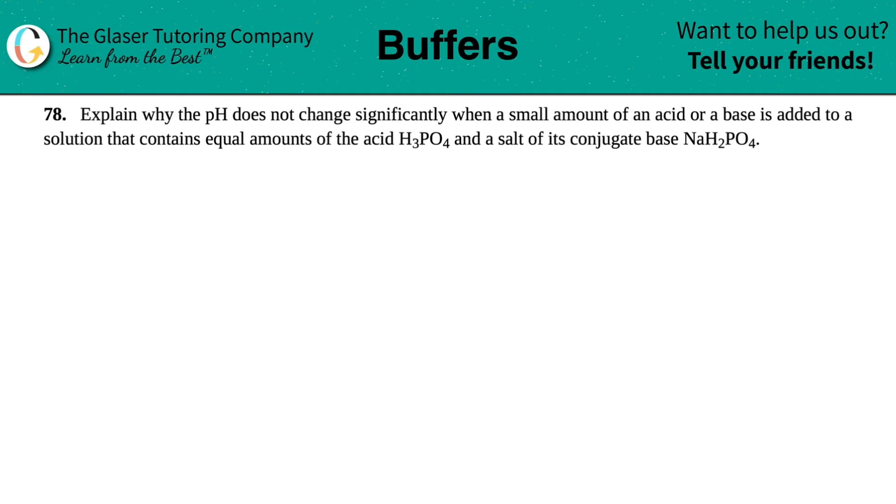Number 78, explain why the pH does not change significantly when a small amount of an acid or a base is added to a solution that contains equal amounts of the acid H3PO4 and a salt of its conjugate base NaH2PO4.